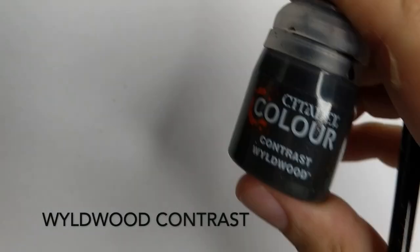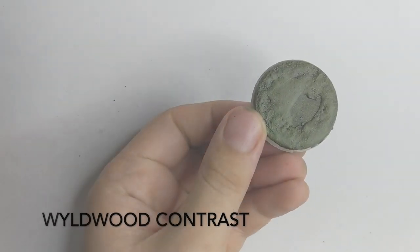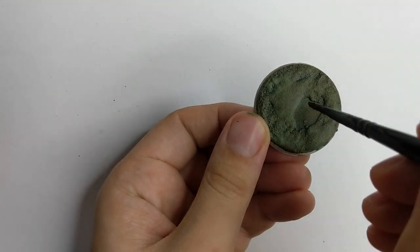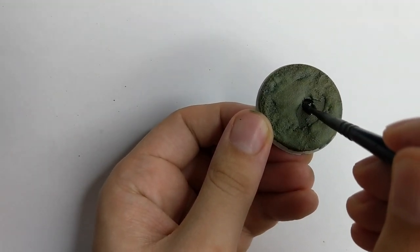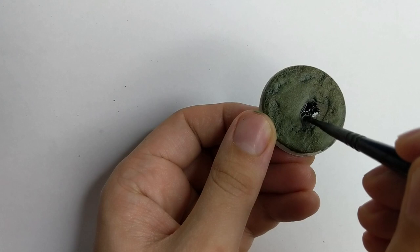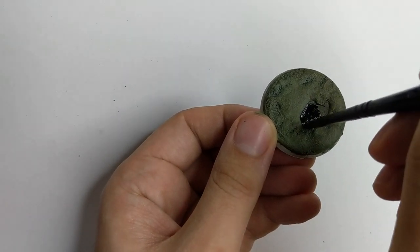For our little pool I will use Wyldwood Contrast. I will just fill up the hole with the color, just soak it pretty well. Put a really nice thick coat on top of it.